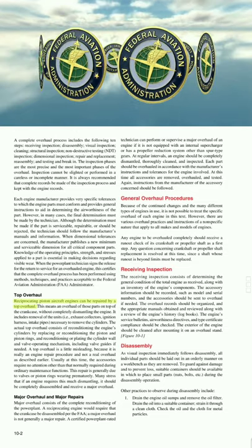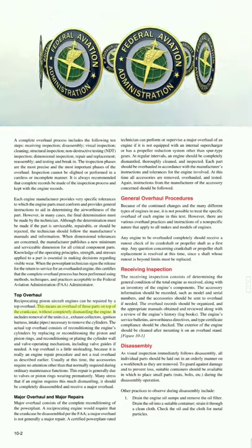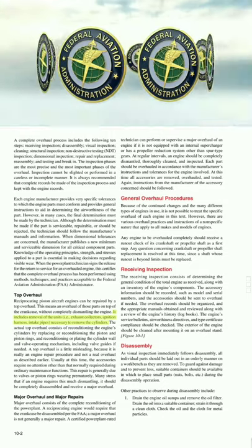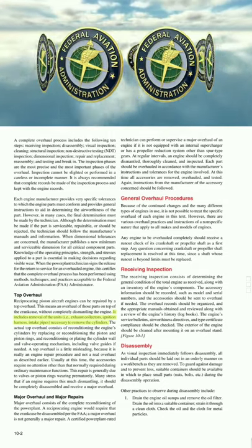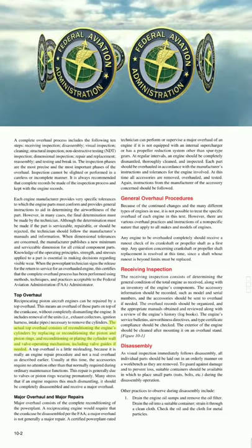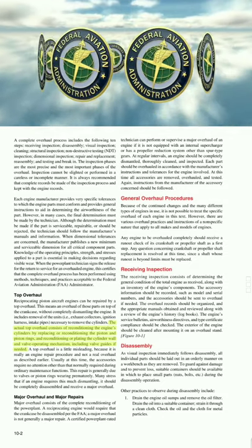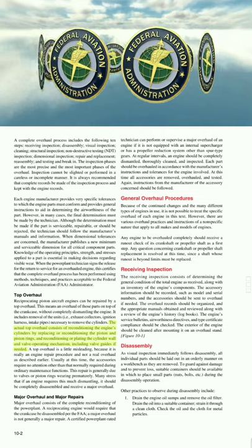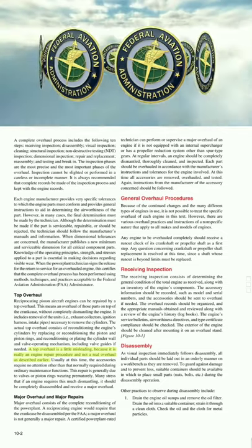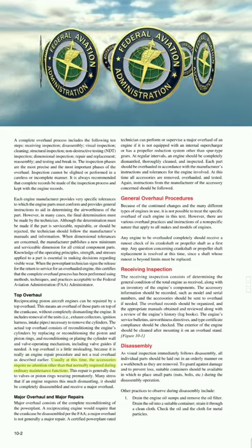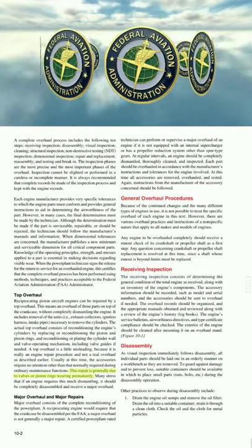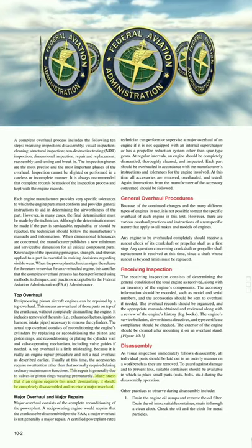Top overhaul: Reciprocating piston aircraft engines can be repaired by a top overhaul. This means an overhaul of those parts on top of the crankcase without completely dismantling the engine — including removal of exhaust collectors, ignition harness, and intake pipes necessary to remove the cylinders. The actual top overhaul consists of reconditioning the engine cylinders by replacing or reconditioning the piston and piston rings, reconditioning or replating the cylinder wall, and reconditioning the valve operating mechanism including valve guides if needed. The top overhaul is a little misleading because it is really an engine repair procedure and not a true overhaul. Usually at this time, accessories require no attention other than that normally required during ordinary maintenance. This repair is generally due to valves or piston rings wearing prematurely.